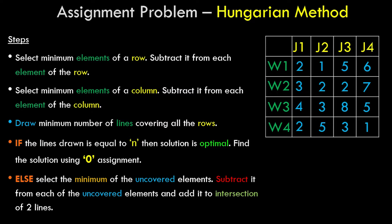We create a table where rows and columns denote the different types of jobs and the different types of workers assigned to each job. In Step 1, we select the minimum element of a row and subtract it from each element of that row. In Step 2, we select the minimum element of a column and subtract it from each element of that column. In Step 3, we draw the minimum number of lines covering all zeros. If the number of lines equals n — the number of rows or columns — the solution is optimum and we find it using zero assignment.